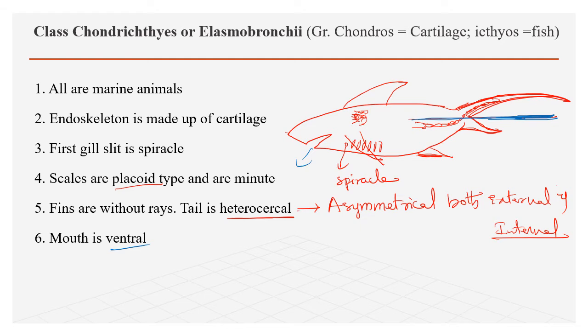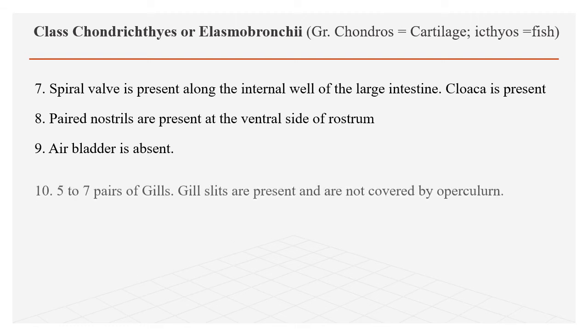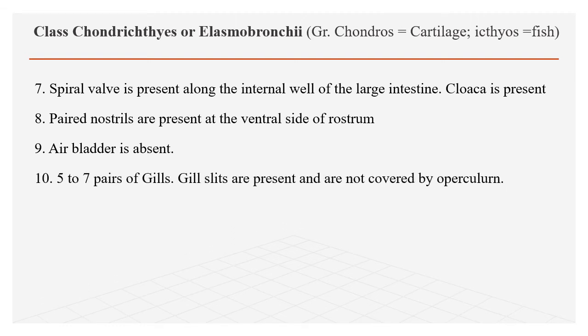The mouth is on the ventral side. A spiral valve is present along the internal wall of the large intestine, which slows down the passage of food, aiding in absorption. They have paired nostrils at the ventral side of the rostrum. Air bladder is absent in this kind of fishes, that is why they continuously swim in water.